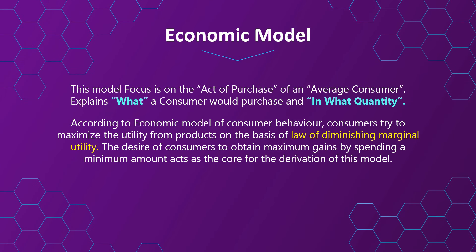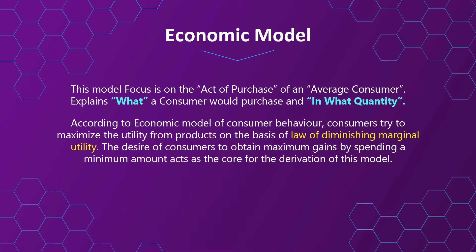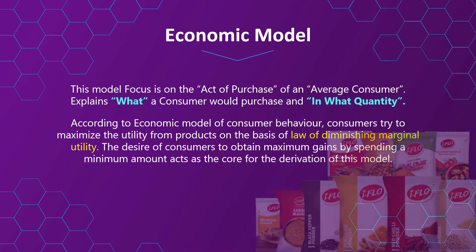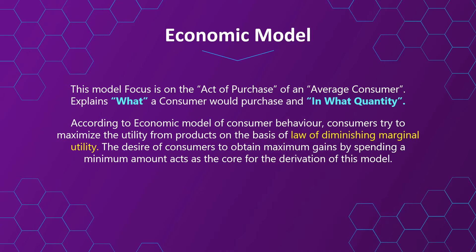The first traditional model is the economic model. This model focuses on the act of purchase of an average consumer — what a consumer would purchase and in what quantity. According to this model, a consumer will buy different quantities of a product according to their prices. For instance, a consumer will buy a similar product offered at a lower price to maximize benefits. An increase in a consumer's purchasing power will allow them to increase the quantity of products purchased.